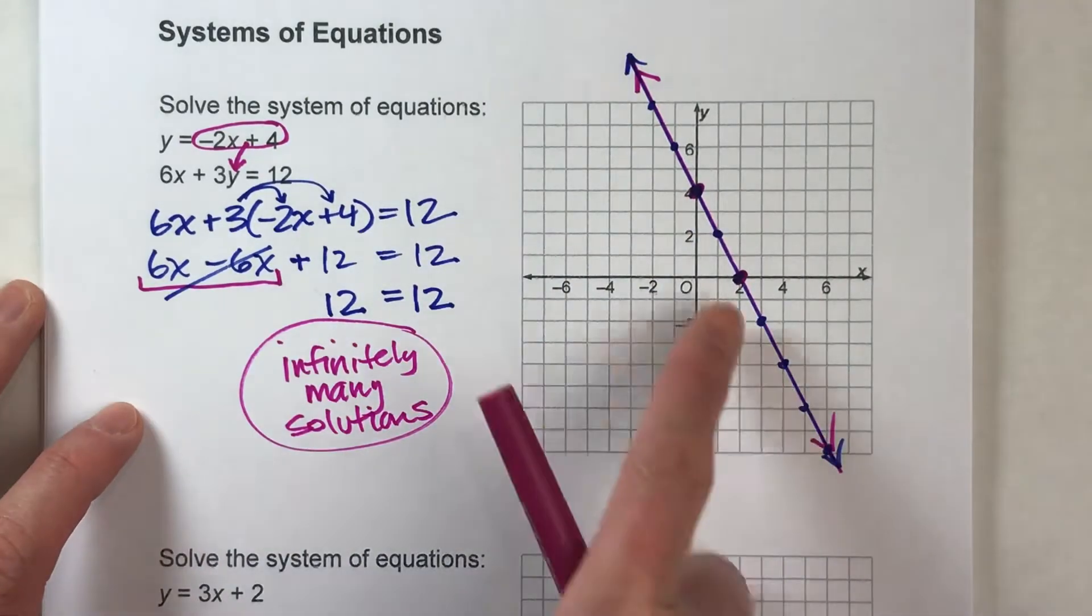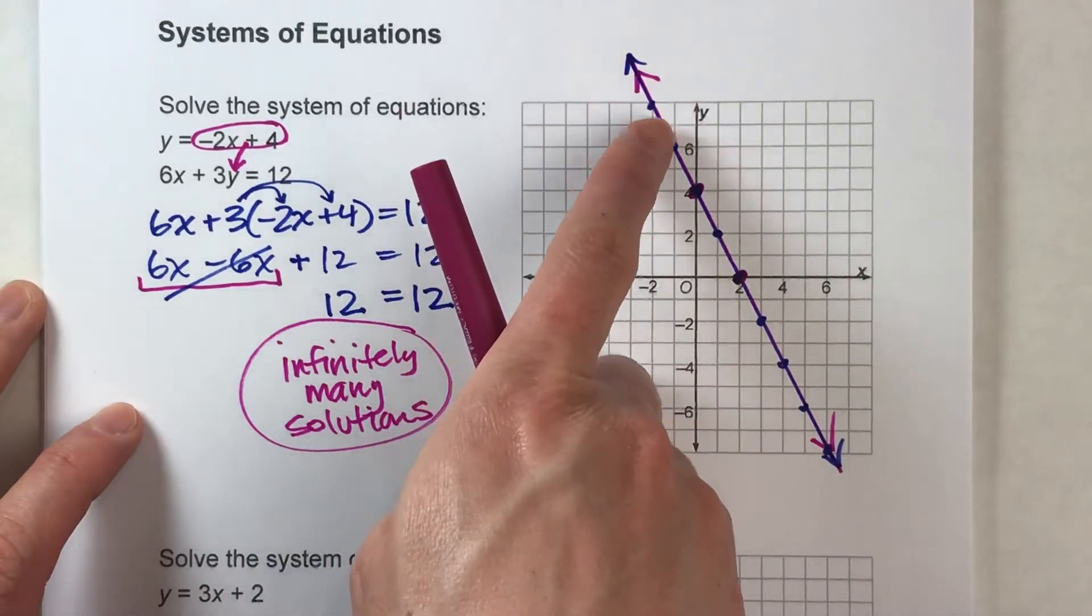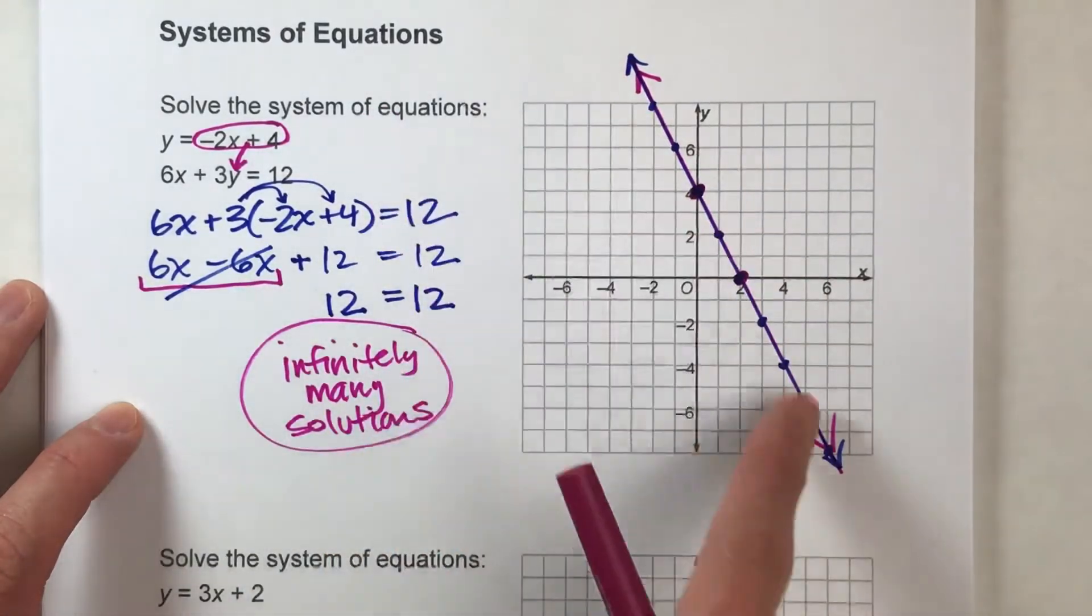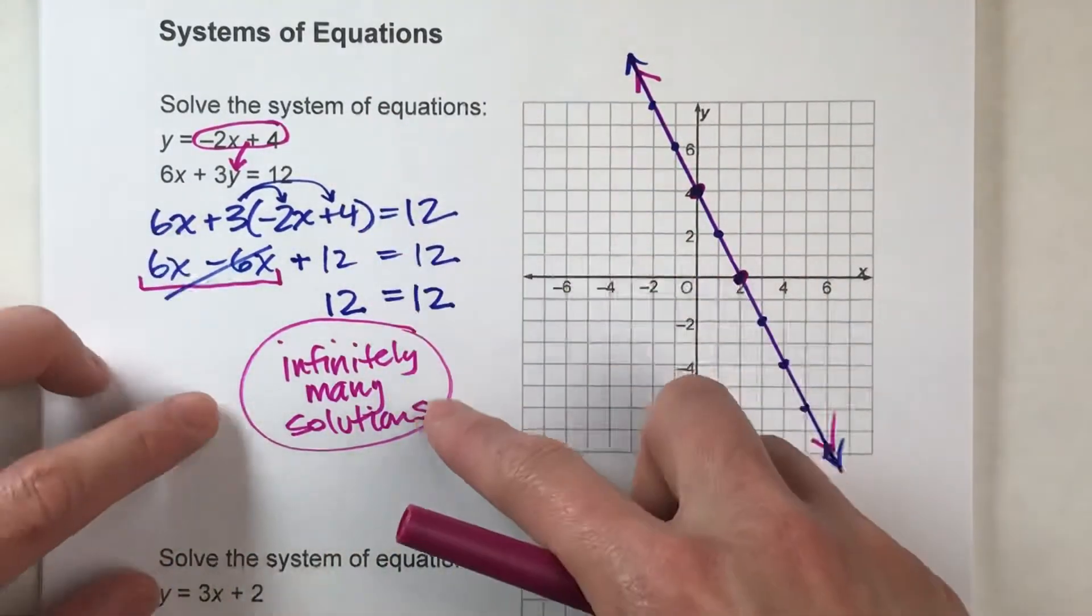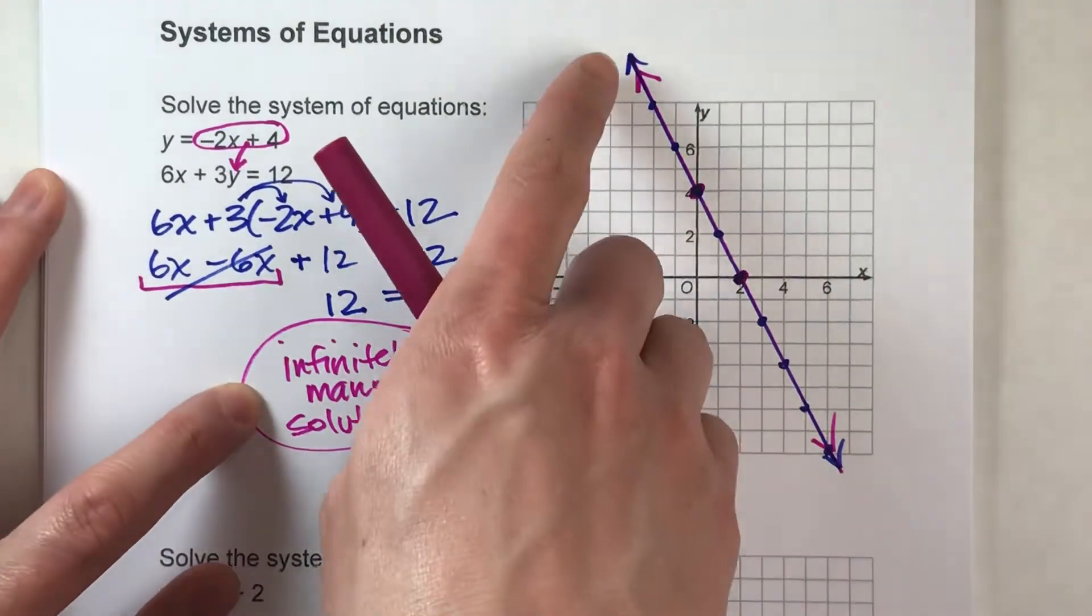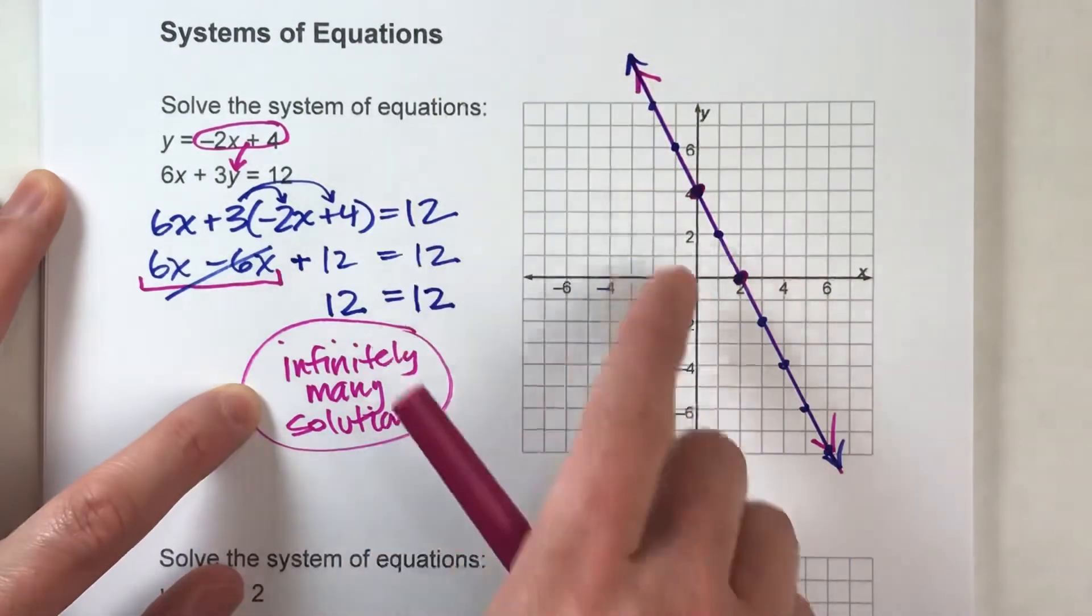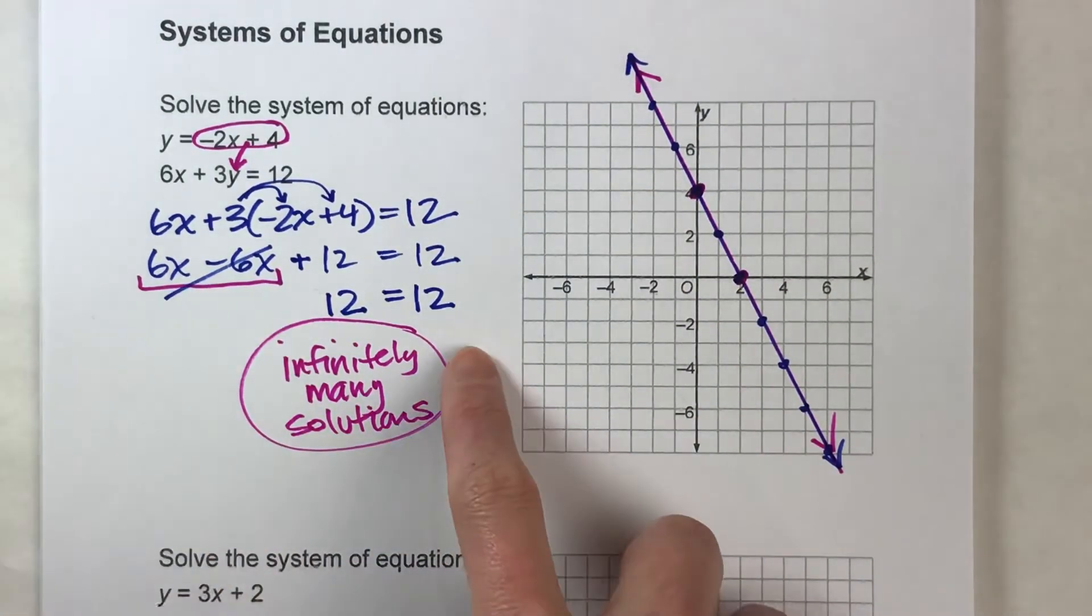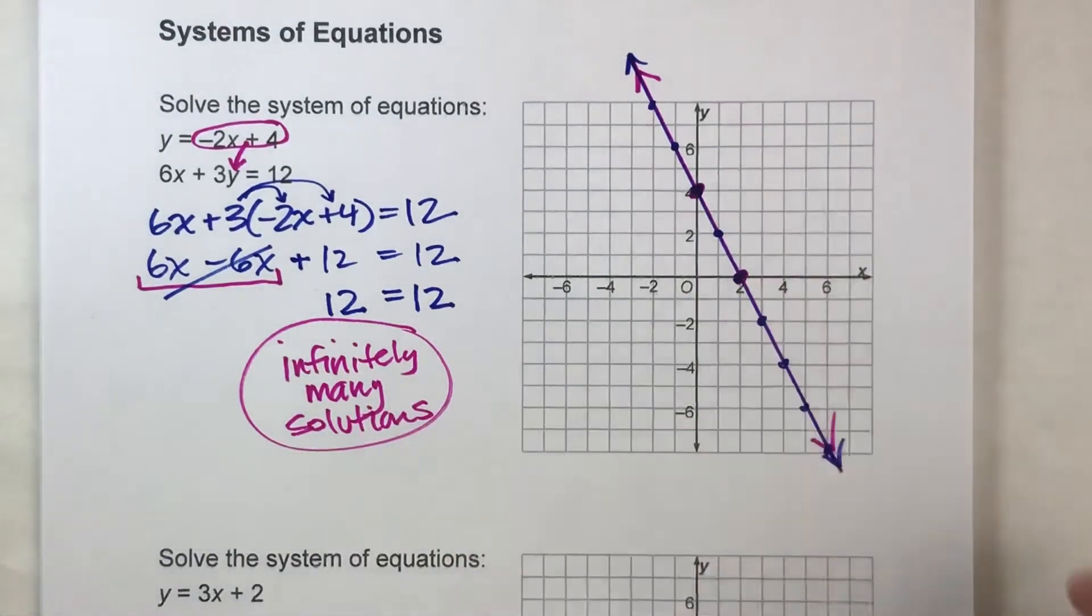Now if you recall, the solution to a system of equations is the point of intersection. And since the line is on top of the other line, all the points on the line are points of intersection. They intersect everywhere on this line. So that tells us that any point on the pink line is a solution to the system, and any point on the blue line is a solution to the system, which is exactly what we found over here. There are infinitely many solutions because every point on the line is a solution. So that's what this looks like algebraically and on a graph.